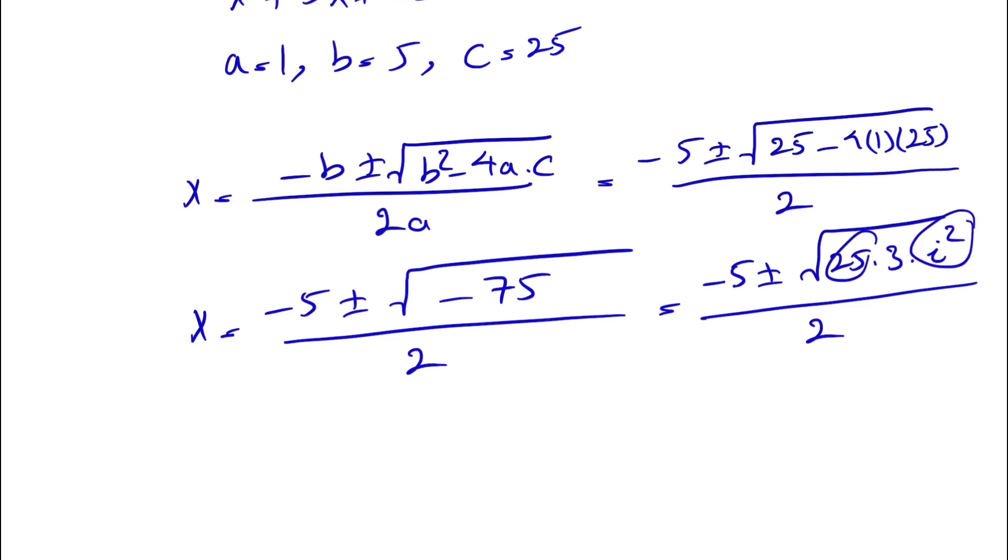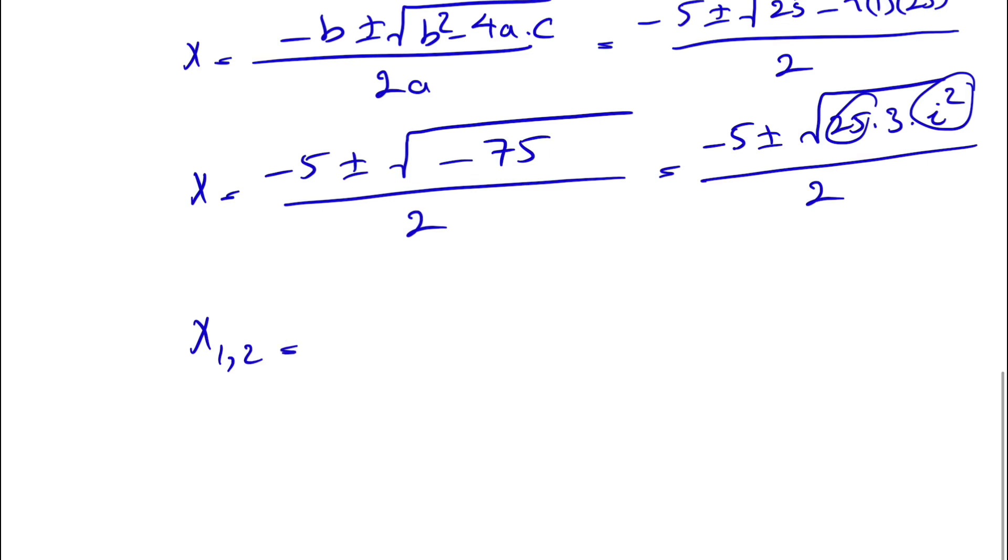We can take out these two from the square root. So our x will be minus 5 plus or minus 5i times the square root of 3, divided by 2. Or we can write it minus 5 divided by 2 plus or minus 5i times the square root of 3 divided by 2.